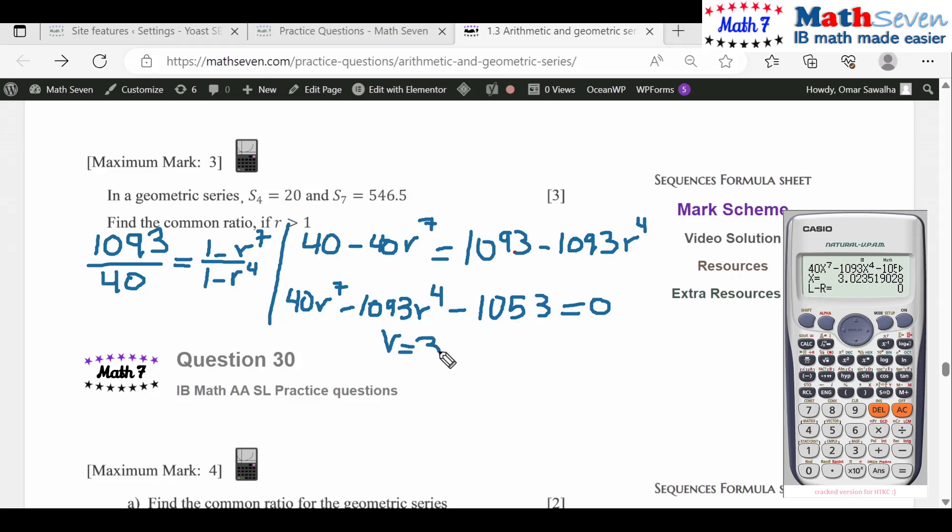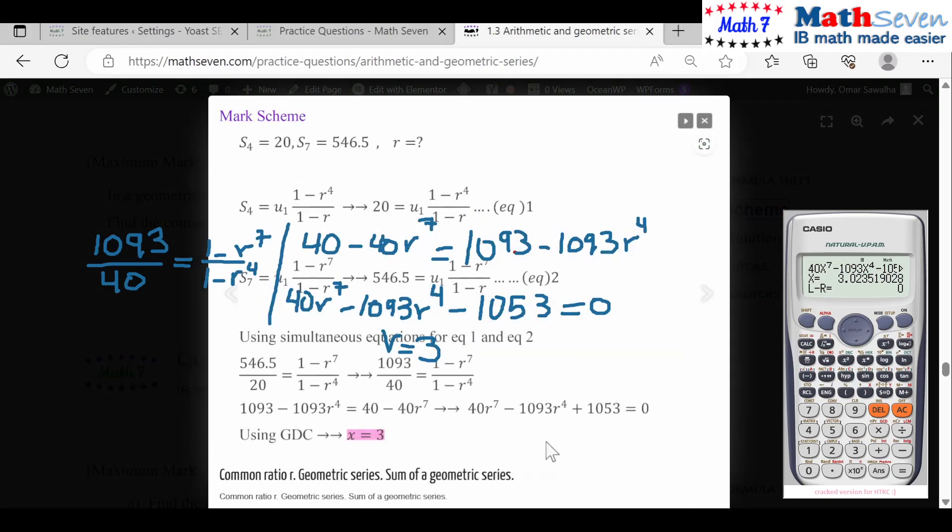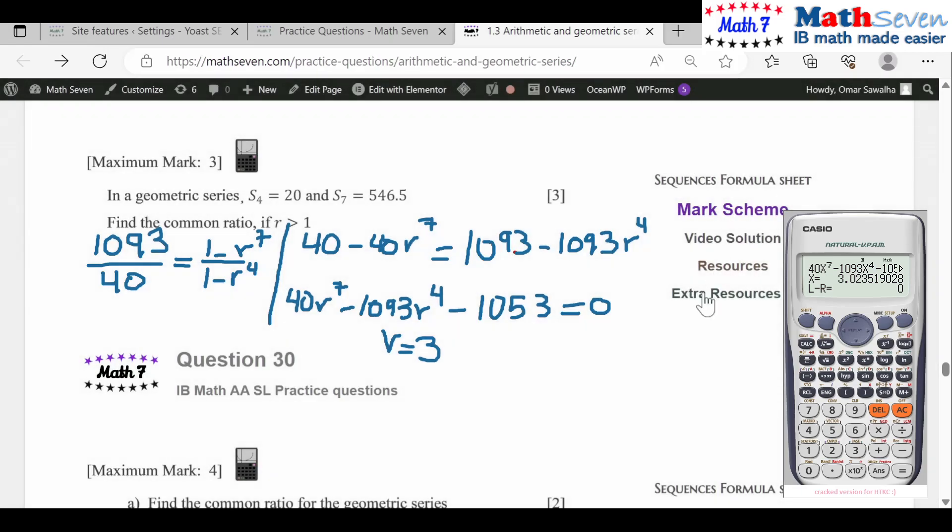Which is exactly what we got in the mark scheme. These types of questions cannot be solved using factorization and they won't be given in paper one. They have to be given in paper two where you can use a calculator, because r^7 equations you are not responsible to know how to solve using regular mathematical methods. You have to use your graphing display calculator. Let me know your understanding or your comments about this question.